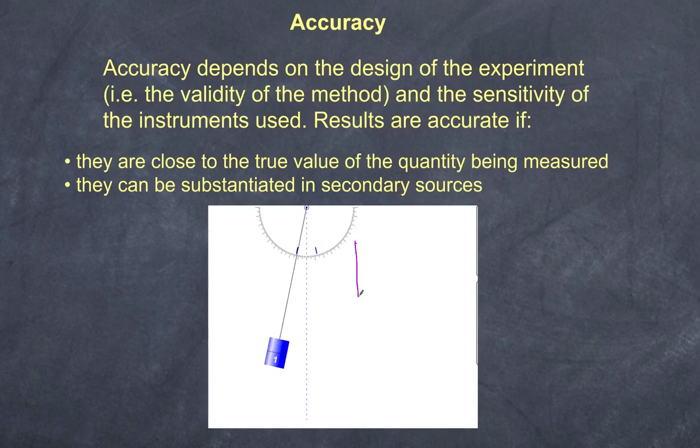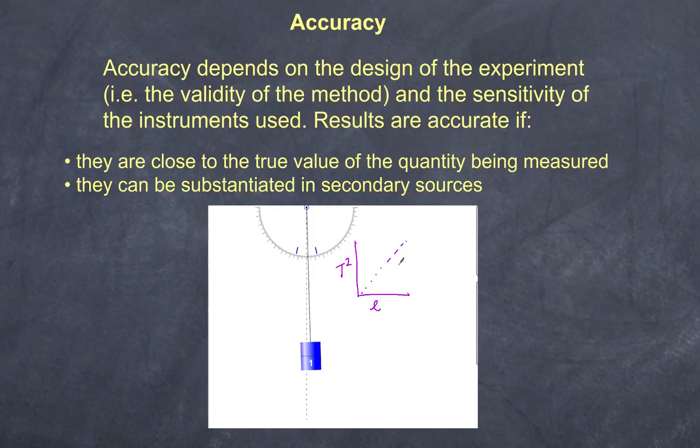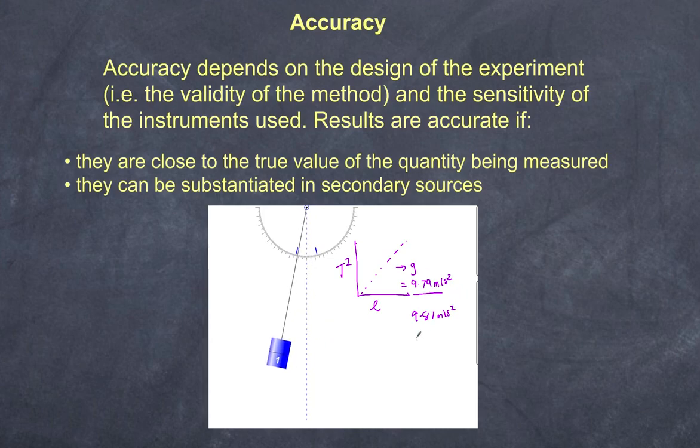Here's our pendulum and I graph my periods and my length and I get a result that looks something like this and from the slope here I'm able to determine the value for g and I end up getting a value of 9.79 meters per second squared. This is very close to the accepted value of the acceleration due to gravity which we know to be 9.81 meters per second squared. There is a very small percentage error between these two values. So we say that this is a reasonably accurate experiment. We're getting close to the accepted value.